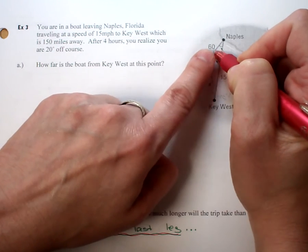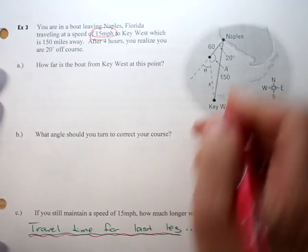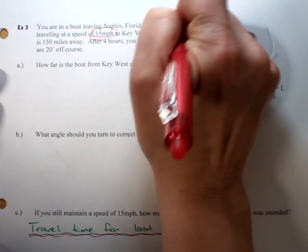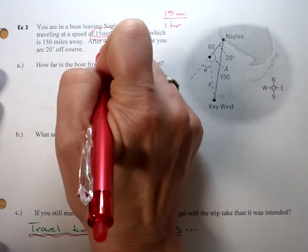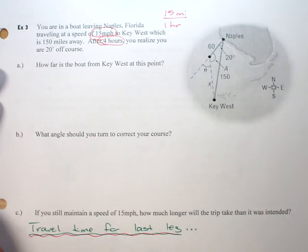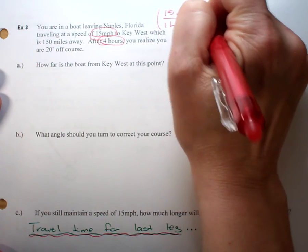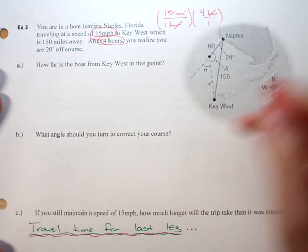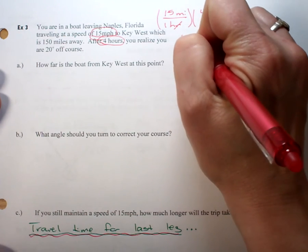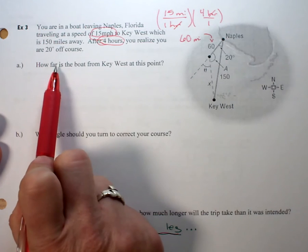This 60 comes from the fact that my boat is traveling 15 miles per hour, and it takes me four hours to figure out that I'm not going the correct direction. So 15 times 4 hours gives me my 60 miles. I think it's good to know where those numbers came from.